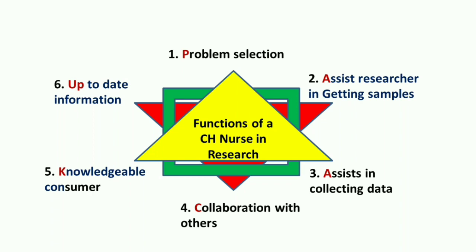In detail: first, the community health nurse identifies significant problems and conducts research. Second, she assists other researchers in getting samples from her community. Third, she assists in collecting data for various researchers working in her area. Fourth, she works collaboratively with others on a variety of research topics. Fifth, she needs to be a knowledgeable consumer of research findings, since application improves community nursing practice and standards. Sixth, she updates her information by reading relevant journals, participating in group discussions, and attending seminars to stay current in research and evidence-based practice.